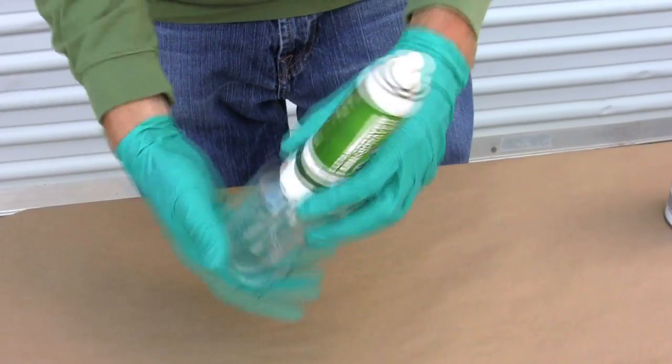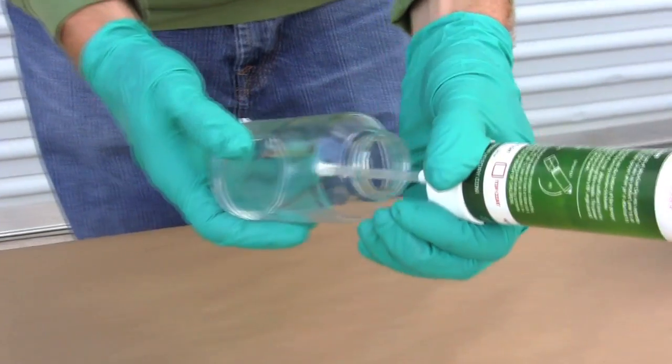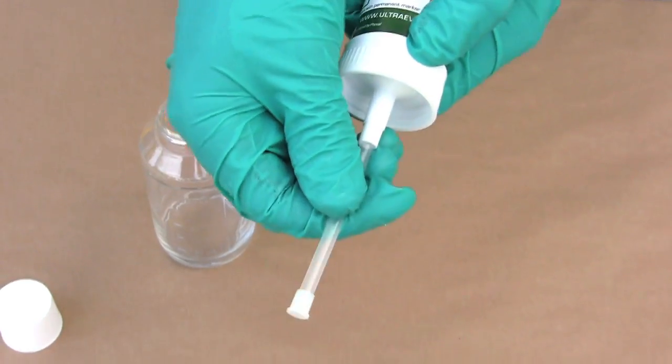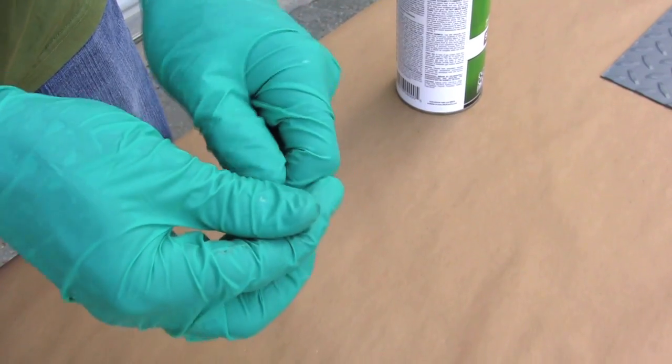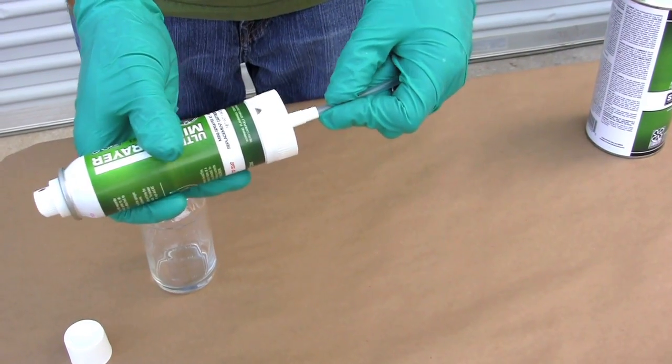The Ultra Mini Sprayer comes with a glass jar, a power unit, and a dip tube. Remove the filter at the bottom of the dip tube. Secure the dip tube firmly into the bottom of the power unit.